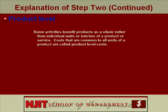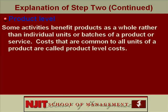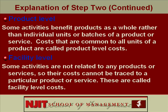Product level: an activity level where overhead varies between products. Some activities benefit products as a whole rather than individual units or batches — costs common to all units of a product are called product level costs. Facility level: some activities aren't related to anything specific — they are common costs called facility level costs. The most obvious example would be rent.